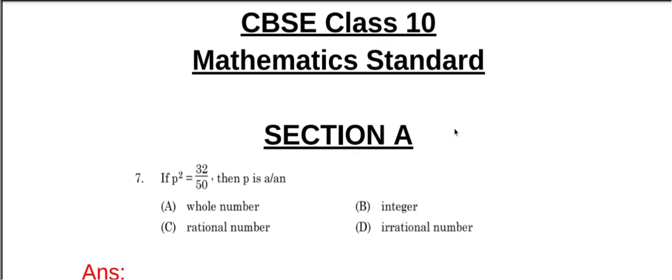Question number 7. If P squared equals 32 by 50, then P is a whole number, integer, rational number, or irrational number?